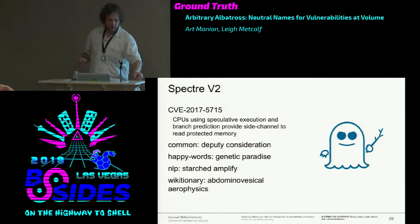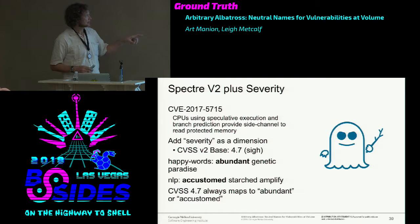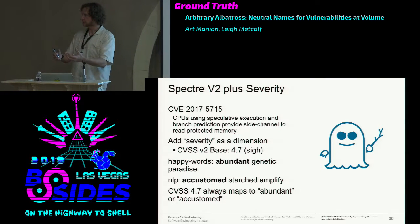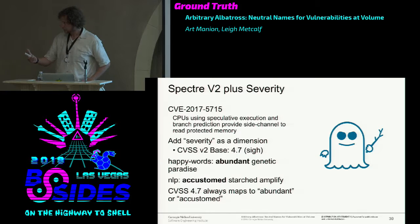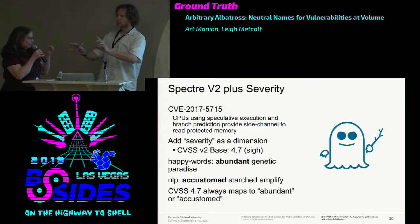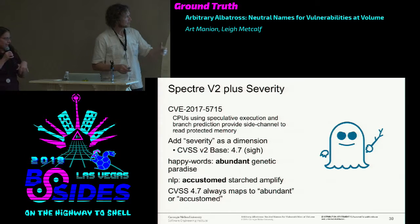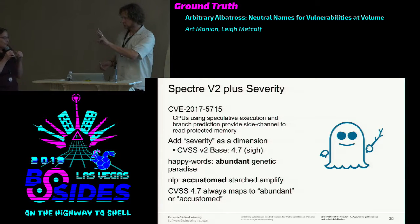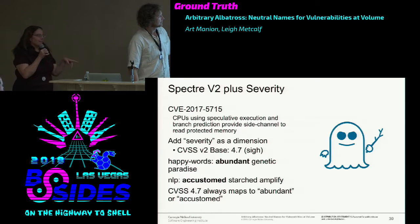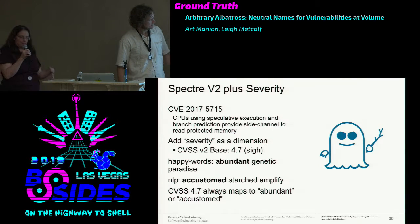As an experiment, we talked about neutral names versus a name that has some meaning. We're going to try it with severity. We've taken the integer part of the CVE number and turned it into adjective-noun. Then I took the CVSS score—as CVSS scores go, you don't actually get all 100—anytime you see a 4.7, you get the word 'abundant' in the happy words and 'accustomed' in the NLP list. You could encode meaning here if you wanted to add a word to it.